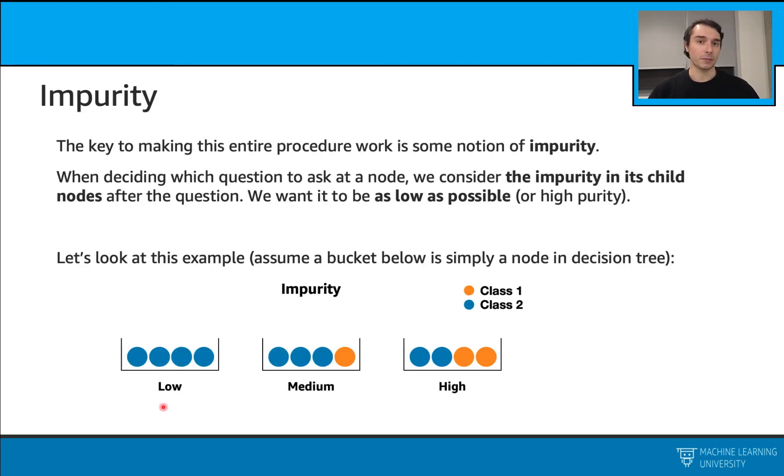Impurity is an important concept when it comes to building our decision trees, because when we are deciding which question to ask at a node, we consider the impurity in the child nodes after asking that question, and we want this impurity to be as low as possible. In other words, we want to have some high purity child nodes.